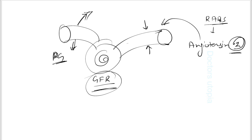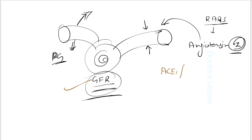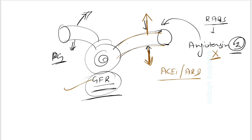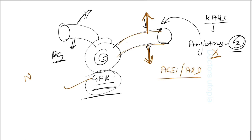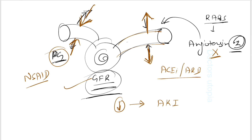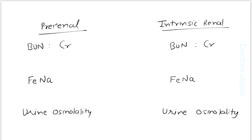Prostaglandins dilate the afferent arteriole, which also helps maintain GFR. If a patient is taking ACE inhibitors or ARBs, these drugs block angiotensin 2, causing the efferent arteriole to dilate. If the patient is taking NSAIDs, these block prostaglandins, causing the afferent arteriole to constrict. Both mechanisms reduce GFR and lead to AKI. That's why patients taking ACE inhibitors or NSAIDs long-term should have their kidneys monitored.